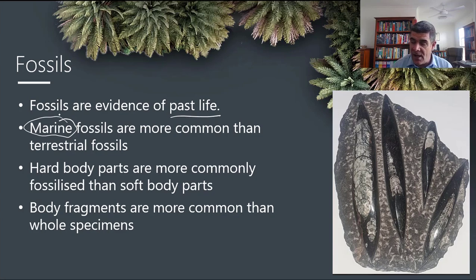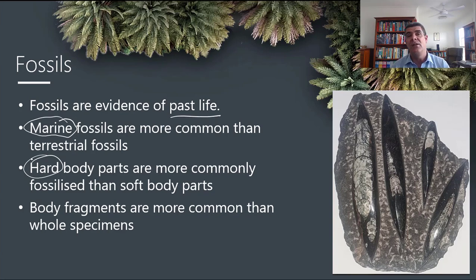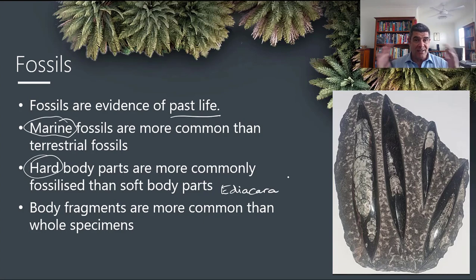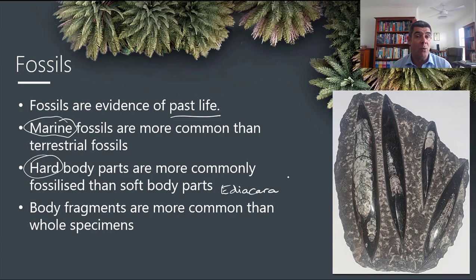Hard parts are more commonly fossilized than soft parts. Hard body parts like skeletons, bones, exoskeletons, and shells are the sorts of things we find a lot in the fossil record compared to soft body parts. This is why fauna like the Ediacara was so incredible — it contained whole assemblages of soft-bodied organisms. Finding a whole community of these types of organisms is a major discovery that tells us a lot about a time period we didn't know much about.